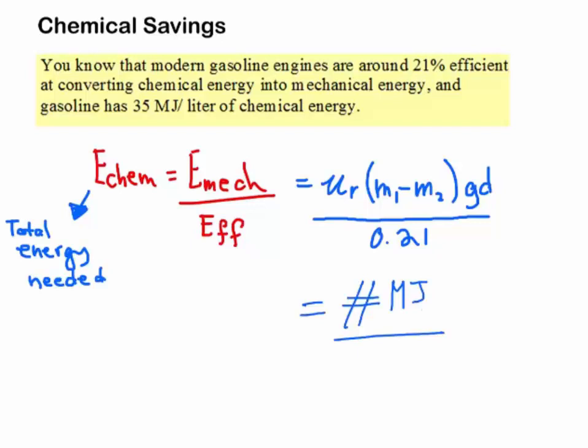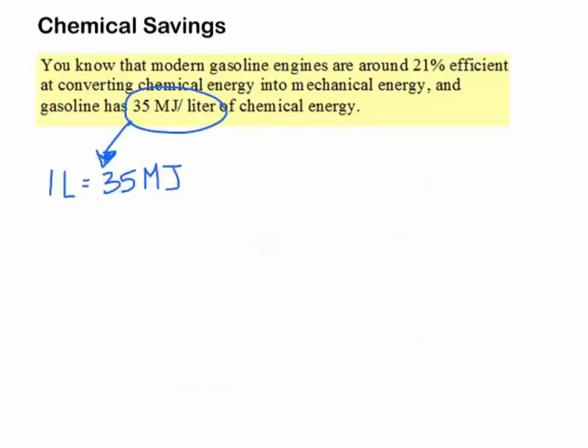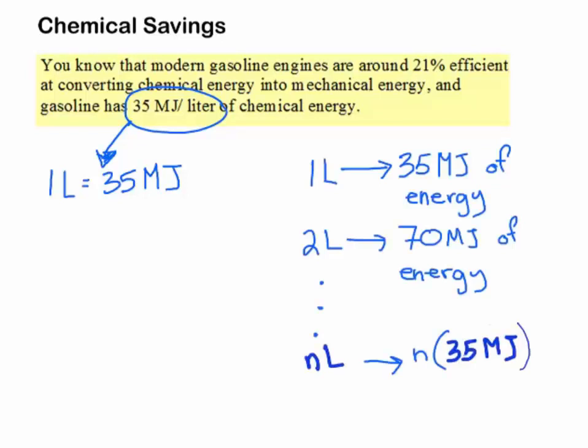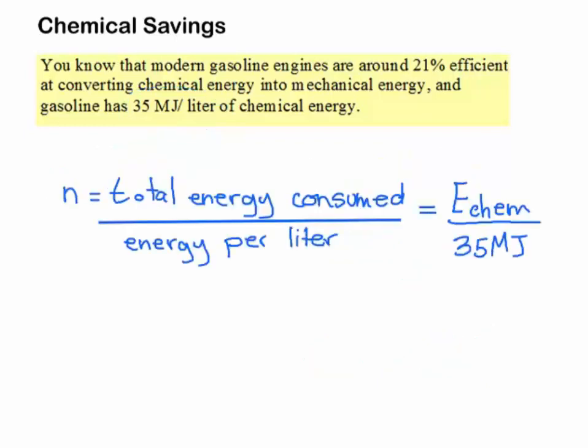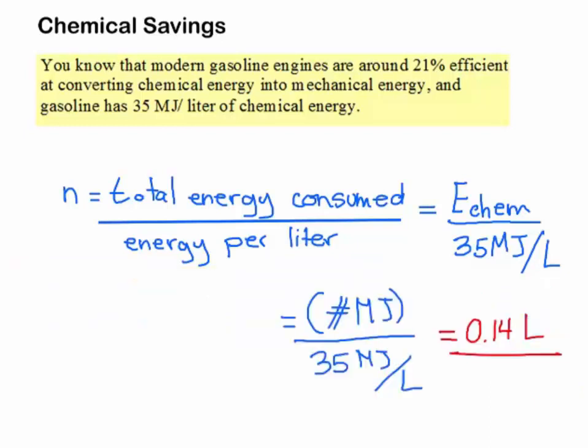So you can go ahead and plug the numbers in, and you'll get some number in megajoules that actually doesn't answer the question because we're looking for the number of liters. So let's do that instead. We know that 1 liter equals 35 megajoules. We can make a relationship and say that n liters is going to equal a certain amount of megajoules. So let's say that n equals the total energy consumed over the energy per liter. The total energy consumed is our e-chem, and we have energy per liter as 35 megajoules. Now we can go back to our variables and see their values and plug them in to get a number. The megajoules will cancel out, and we should get 0.14 liters, which is the savings in liters we get by reducing the mass of the car.